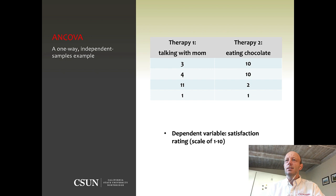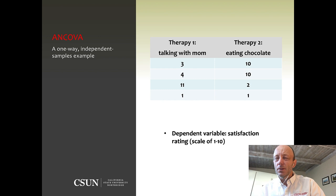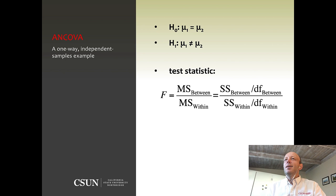The example we're going to use involves two types of therapy: talking with mom and eating chocolate. The one independent variable is therapy type with two levels. Four different people did the first one and four different people did the second one, so it's independent groups. The dependent variable is satisfaction rating in terms of the therapy. We've got an ANOVA we can do first, followed by an ANCOVA.